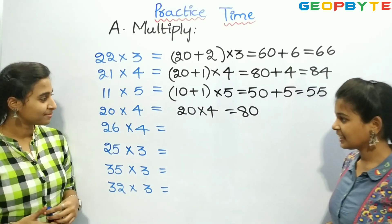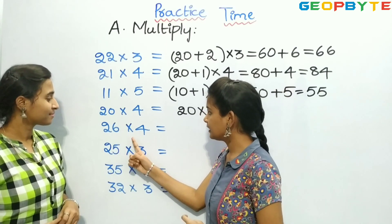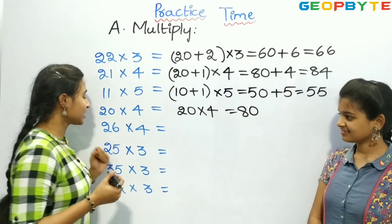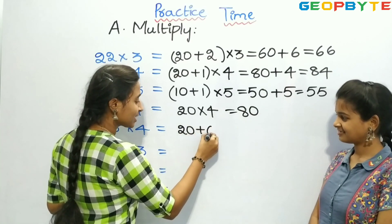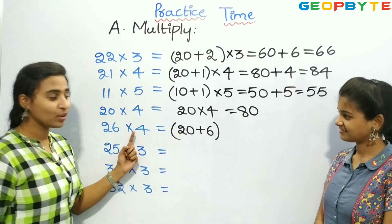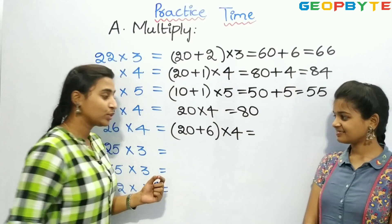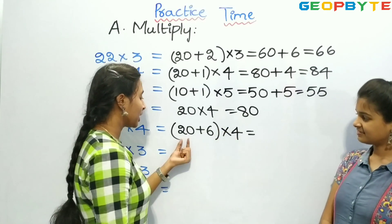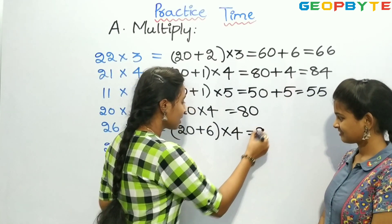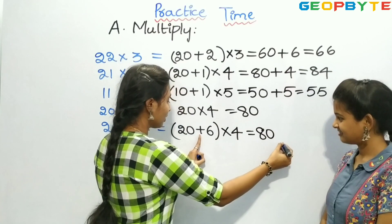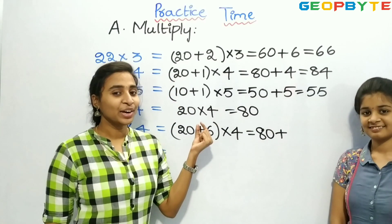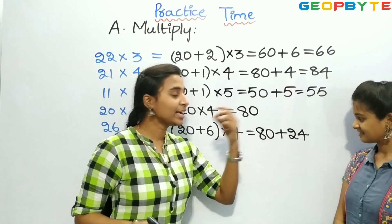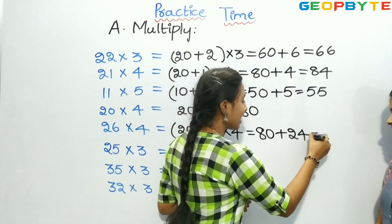Now let us see the next one: 26 into 4. Children, now we need to split 26. 26 is split as 20 plus 6, into 4. We need to multiply 20 and 4 plus 6 and 4. First, 4 twos are 8 and we have a 0, so it is 80. Plus, 4 sixes are 24. So 80 plus 24 is nothing but 104. Let us write 104.